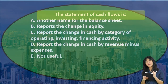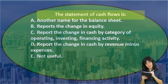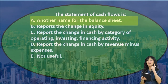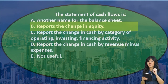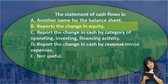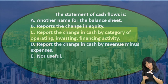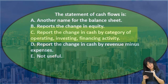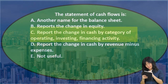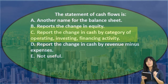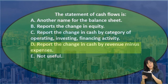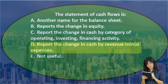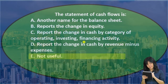Next question: the statement of cash flows is A. Another name for the balance sheet. B. Reports the change in equity. C. Reports the change in cash by category of operating, investing, and financing activities. D. Reports the change in cash by revenue minus expenses. E. Not useful.